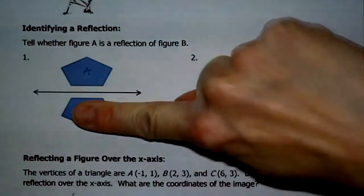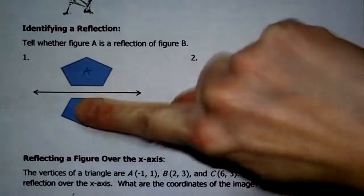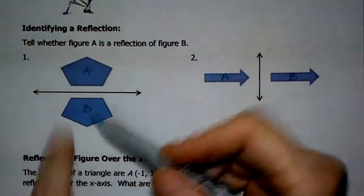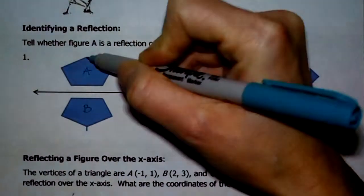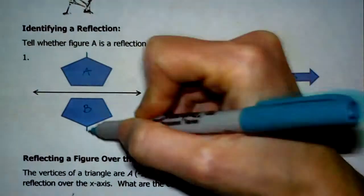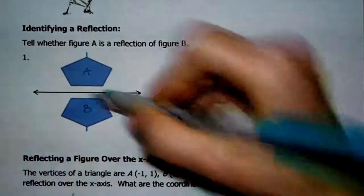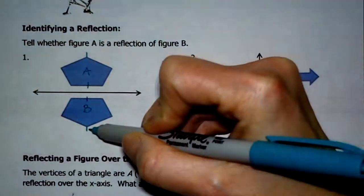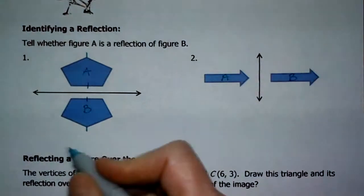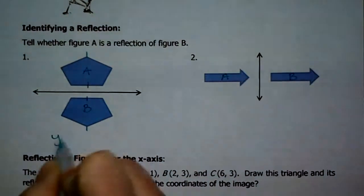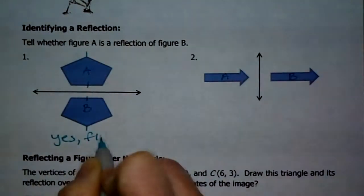So here's A. I want to know if A is a reflection of B. So if you start with B, if we were to flip B over this line of reflection, is B looking in the mirror? It looks to me like it is because I see here's the point, the top of B, and that is on the opposite side there. Those side links are both the same. It's flipped right over, so we would say yes and we can just say flipped.